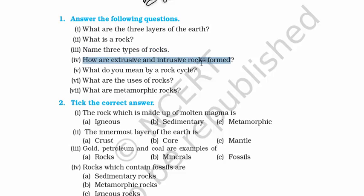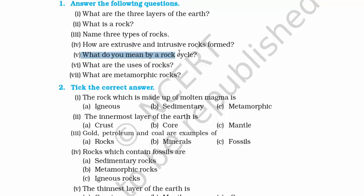Fourth question: How are extrusive and intrusive rocks formed? Extrusive means outside; intrusive means inside. When magma comes out from the volcano and spreads over the crust — the outer layer of the earth — and cools down, it forms an extrusive igneous rock. But the magma which remains inside the core forms another set of igneous rock called intrusive rock. Fifth question: What do you mean by a rock cycle? Rock cycle is a chain reaction where a rock goes through extreme physical as well as chemical change. For example, limestone turns into marble, and igneous or sedimentary rock becomes metamorphic rock.